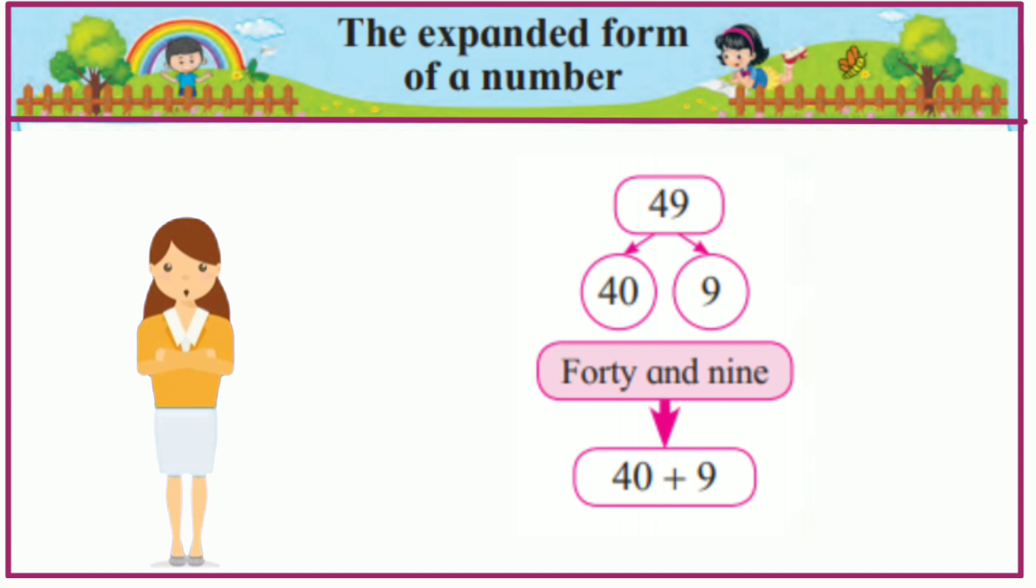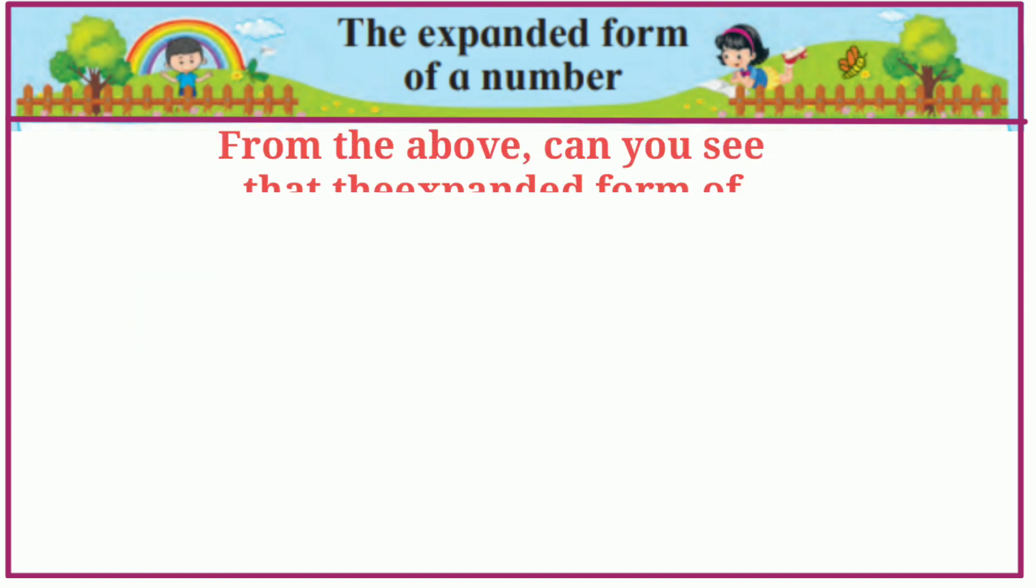49. The place value of 4 is 40 and the place value of 9 is 9. Means 40 and 9, so expanded form will be 40 plus 9.